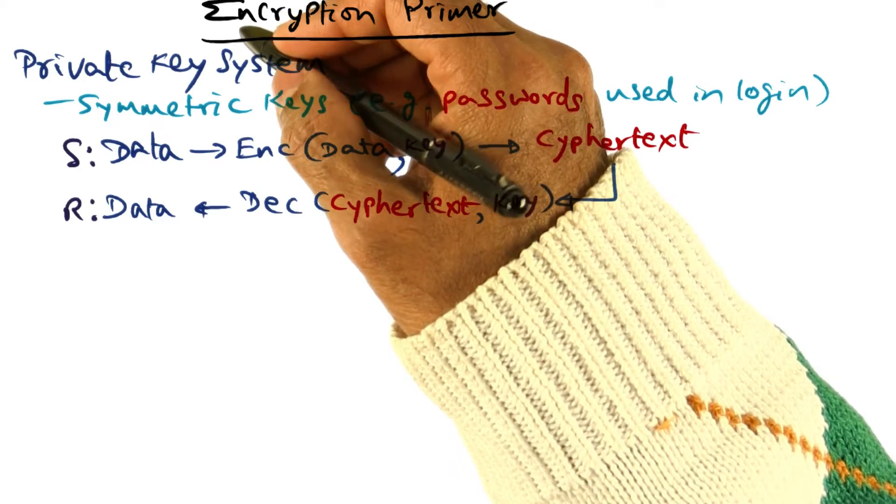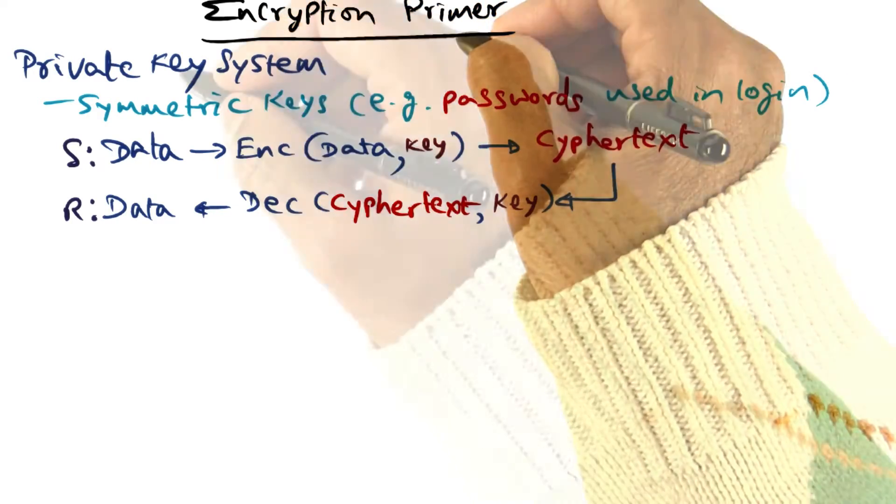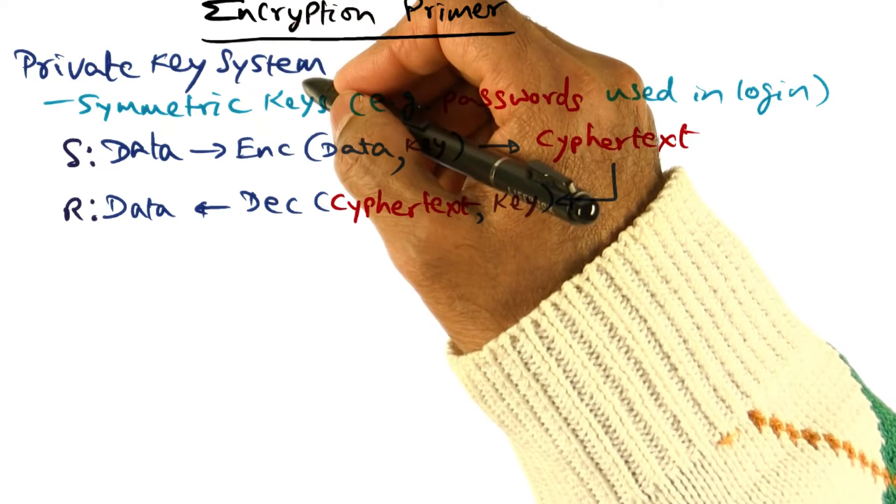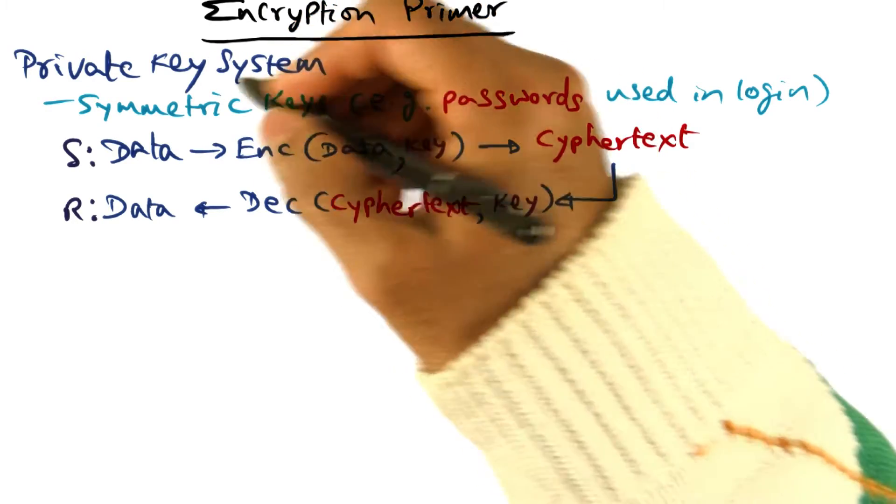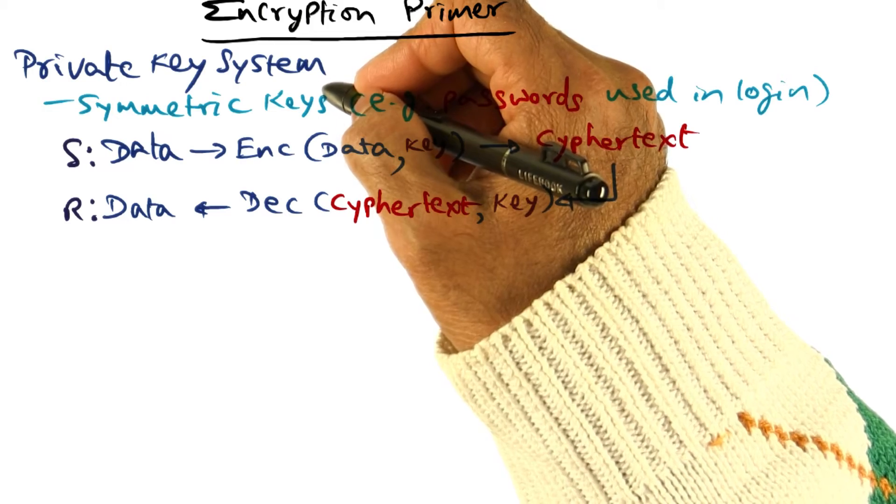Let me give you a very quick refresher on encryption. There are two families of encryption systems. One is the private key cryptosystem.